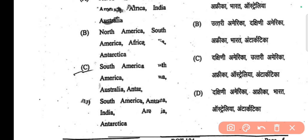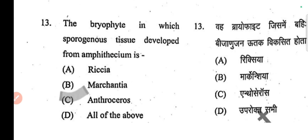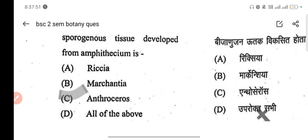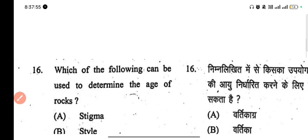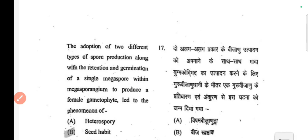Next question: the periderm which is progenous tissue developed from amphitheciusm — the correct answer is C. Next question: which of the following can be used to determine the age of rocks? We can determine the age of rocks by pollen grains.